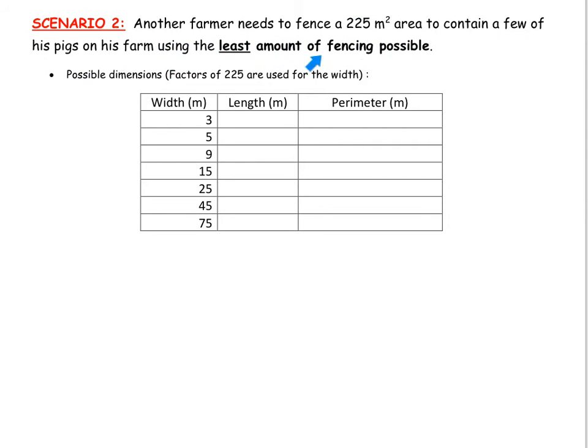And why would I want to minimize perimeter? Of course that would decrease my cost. If I don't have to buy as much fencing then my cost would be less. So we're going to figure out some possible dimensions for these rectangles that all have an area of 225 meters squared. Notice I've given you some specific widths. I've actually chosen factors of 225 to make the numbers for the width and the length nice whole numbers.